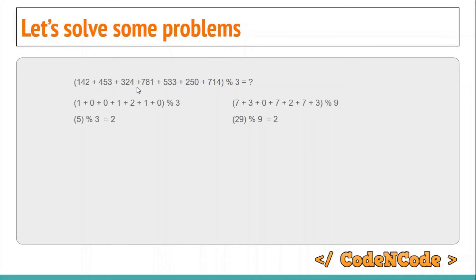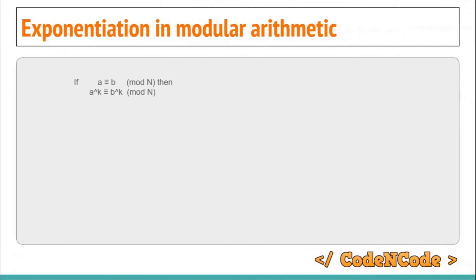Now try to find the result modulo 9. Keep taking modulo before addition and then calculate the final result. The first number gives digit sum 7, so 7 mod 9 = 7. The second gives digit sum 12, so 12 mod 9 = 3. After adding all results you get 29 mod 9, which comes out to be 2.